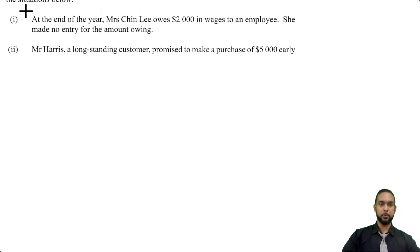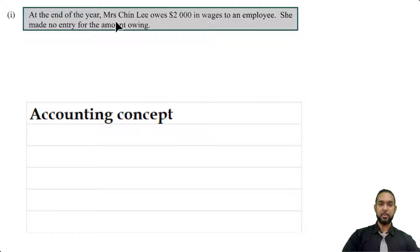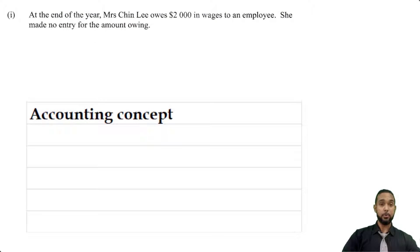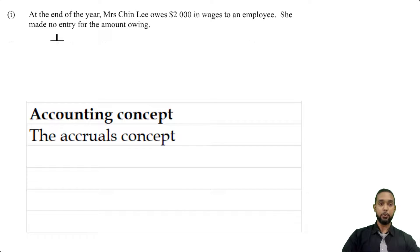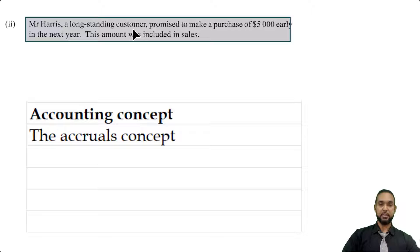In the first situation, at the end of the year Mrs. Chinlee owes two thousand in wages to an employee and she made no entry for the amount owing. In that case she is definitely breaking the accruals concept.